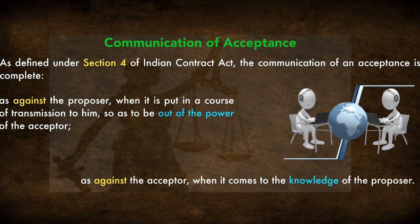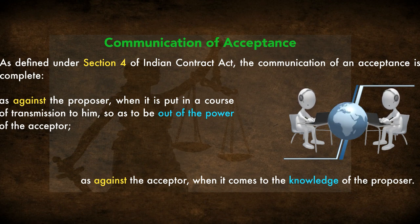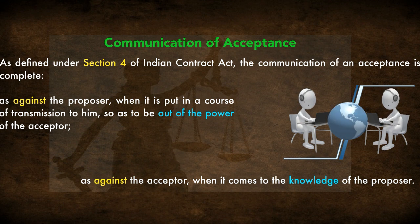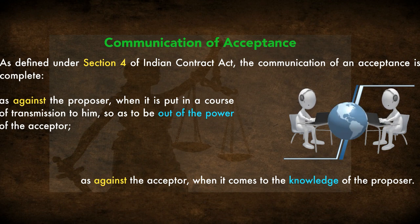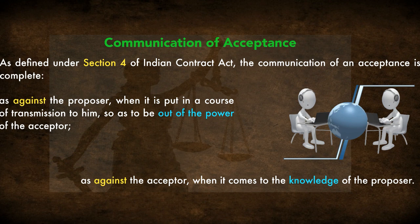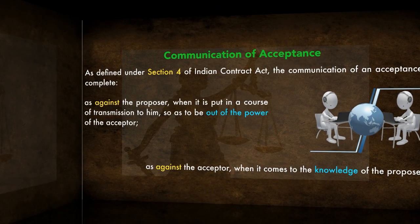As against the acceptor, communication is completed when it comes to the knowledge of the proposer — when the proposer actually receives and knows about your acceptance. At that point, you as the acceptor no longer have any opportunity to revoke it. So there are two stages: the moment you send it, it's done from the proposer's side; once it's delivered and known, it's done from your side.